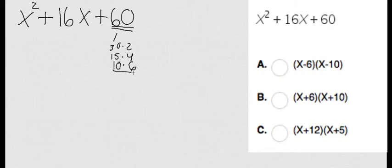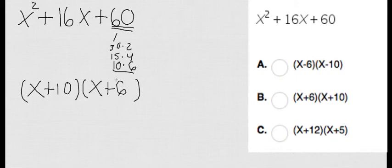10 times 6 is 60, and 10 plus 6 is going to give me 16. So I found my two factors. I do x times x, and then I do plus 10 and plus 6, because look, everyone is positive. Now I'm gonna do (x + 10) and (x + 6).